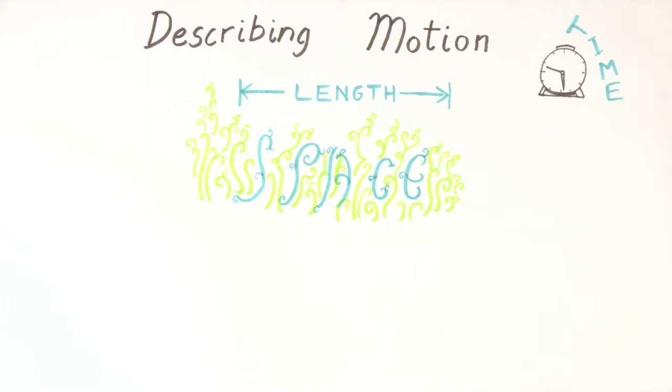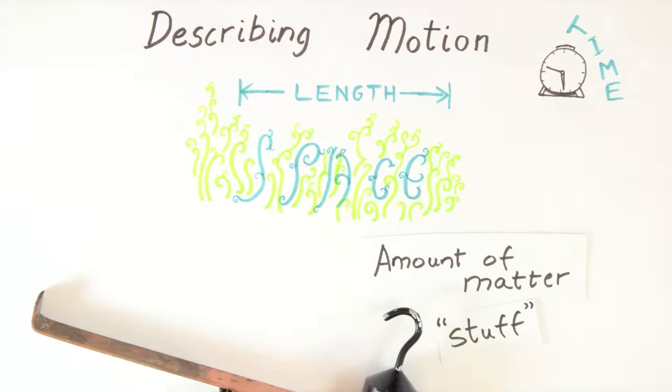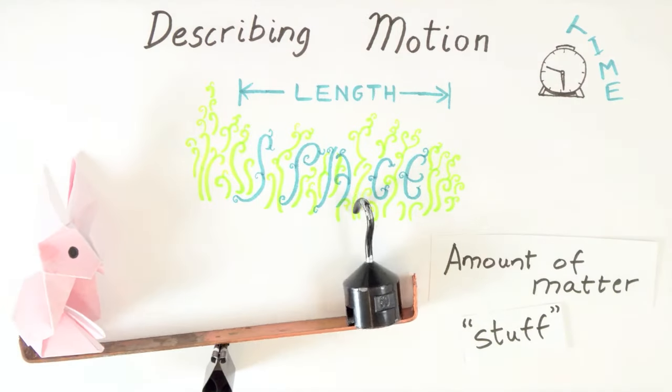Less obviously, we'll typically need a third quantity which describes a physical property of the object itself. Roughly speaking, the amount of matter the object contains. For this, we will use the physical quantity of mass.